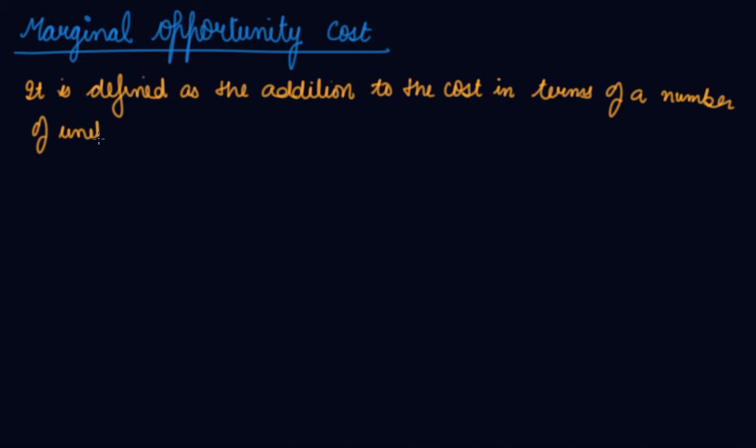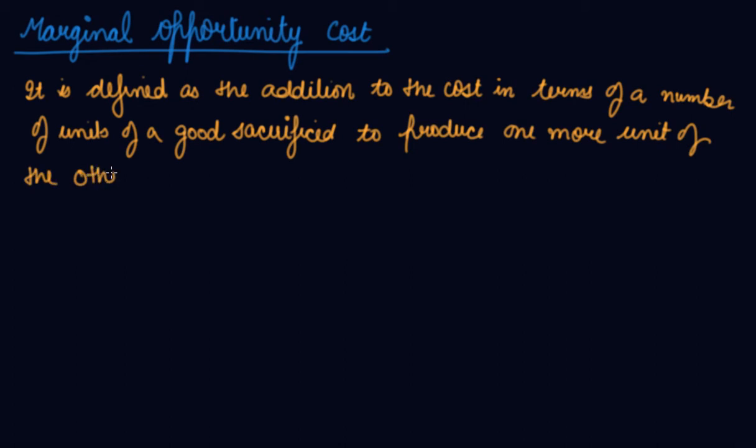Marginal opportunity cost. It is defined as the addition to the cost in terms of a number of units of a good sacrificed to produce one more unit of the other good.